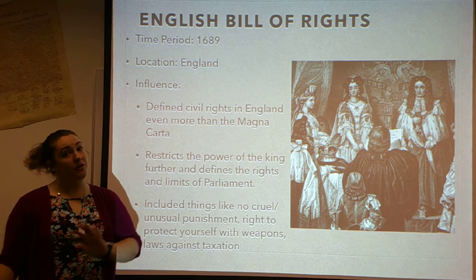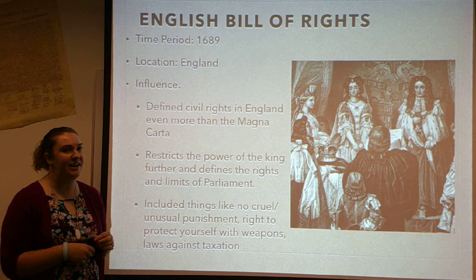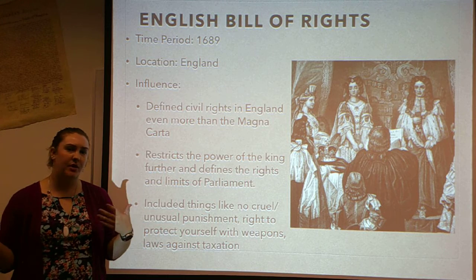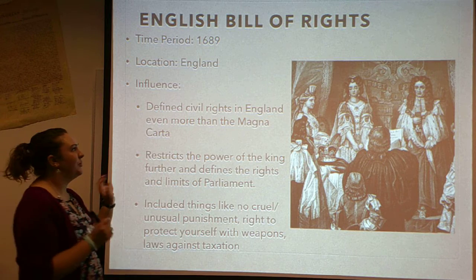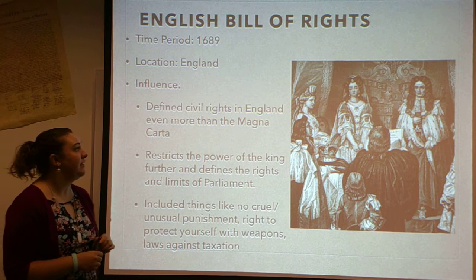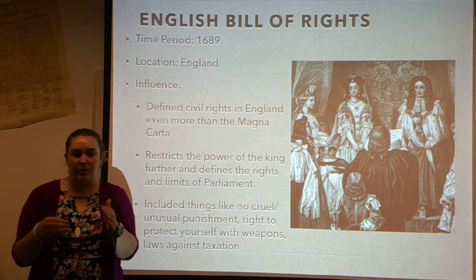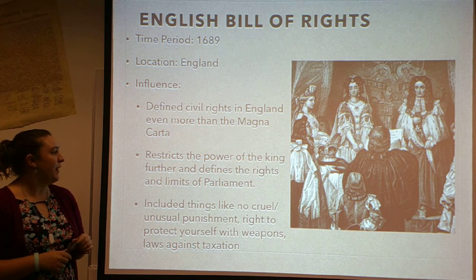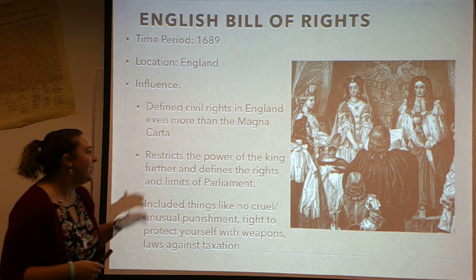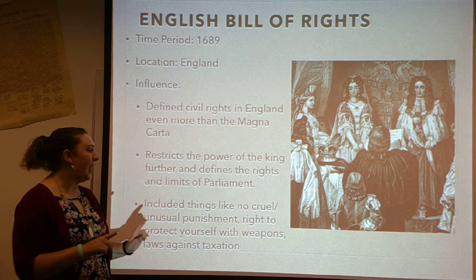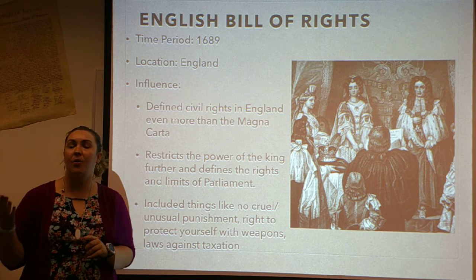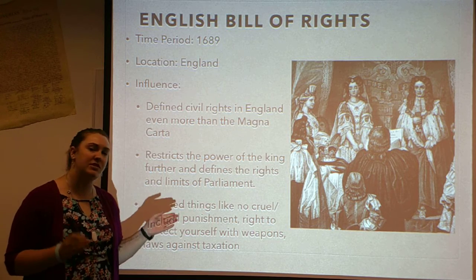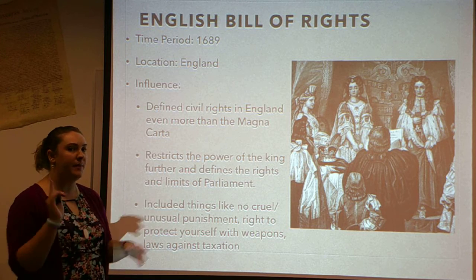The last one we're going to talk about is the most modern one, even though it was written in 1689 — the English Bill of Rights, written in England. It defined civil rights in England even more than the Magna Carta. The Magna Carta was just the first step, but the English Bill of Rights took it so much further. It restricts the power of the king further because he still had too much power. And it actually started to define the rights and limits of parliament — like our Congress, made up of the Senate and the House of Representatives — that they have rights but also limits. So this is where we start to see additional limits on other parts of government, not just the king.